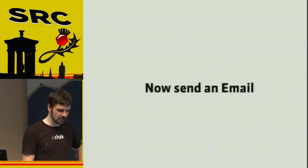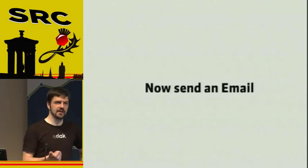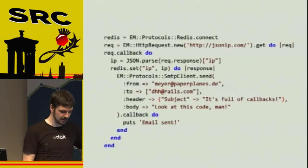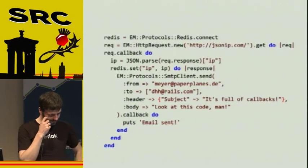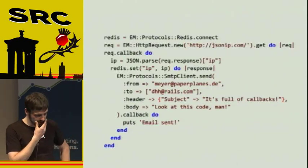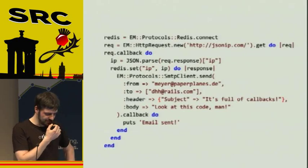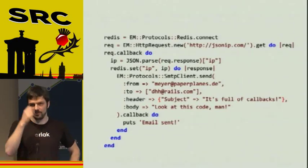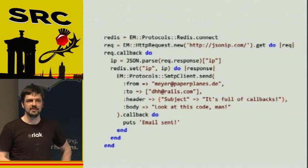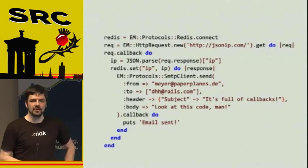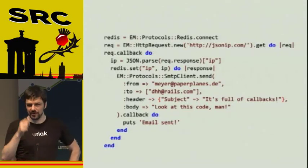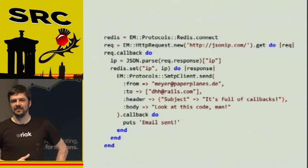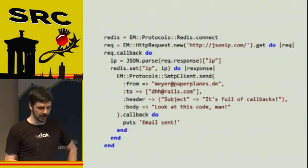We get another callback, and we can use that callback to send an email. So basically the workflow would be: fetch this data, then store it in Redis, then send an email. And now we come up with the problem with evented programming — you end up with a lot of callbacks in your code. You could call it spaghetti code, but it's certainly isn't pretty.